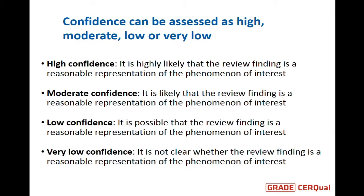The basic idea is that you address your confidence in each individual review finding. For each finding, you will end up on one of four levels. High confidence means it's highly likely that the review finding is a reasonable representation of the phenomenon of interest. Then you go down to moderate confidence, low confidence, and finally very low confidence, where it's not clear whether the review finding is a reasonable representation of the phenomenon of interest.